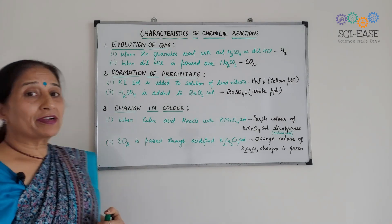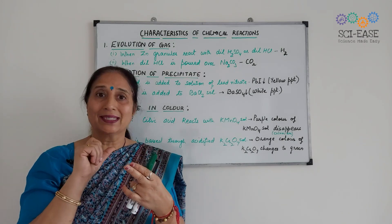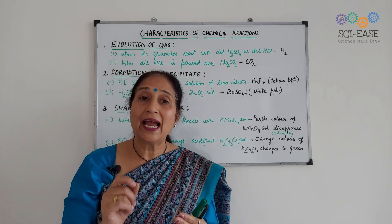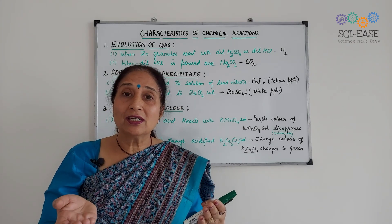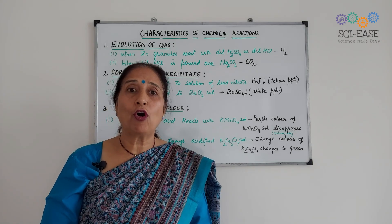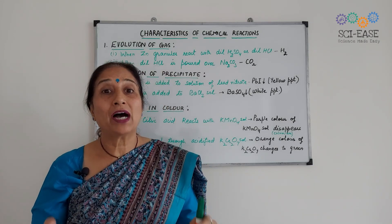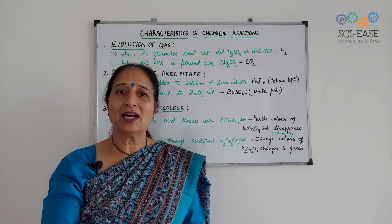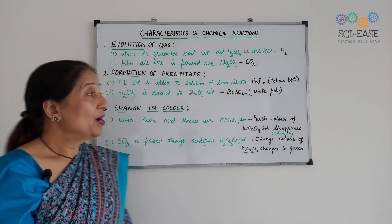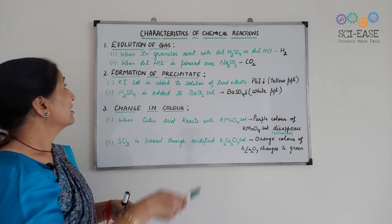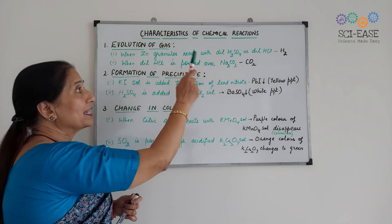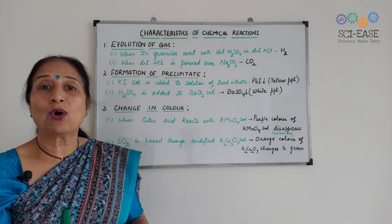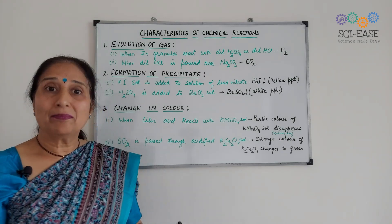In the evolution of gas — when we take zinc granules in a conical flask and pour dilute sulfuric acid or dilute HCl on it, we will observe that some bubbles start forming and these bubbles are of hydrogen gas. You can test this by bringing a burning splinter near the mouth of the conical flask — it will burn with a pop. So the reaction is characterized by the evolution of hydrogen gas.